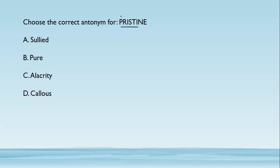Choose the correct antonym for 'pristine.' Pristine means pure, very clean, and spotless. The correct antonym is dirty or filthy — the answer is 'soiled,' meaning having various dirty spots. 'Pure' is a synonym for pristine. 'Alacrity' means eagerness or enthusiasm. 'Callous' means someone who is very indifferent and insensitive toward others, holding others in disregard. The answer is 'soiled.'